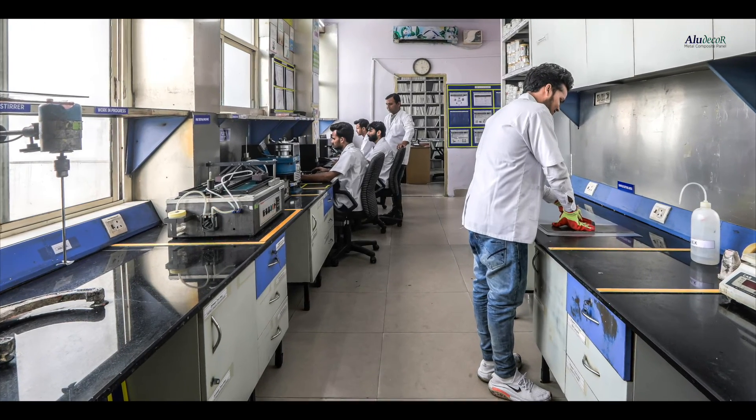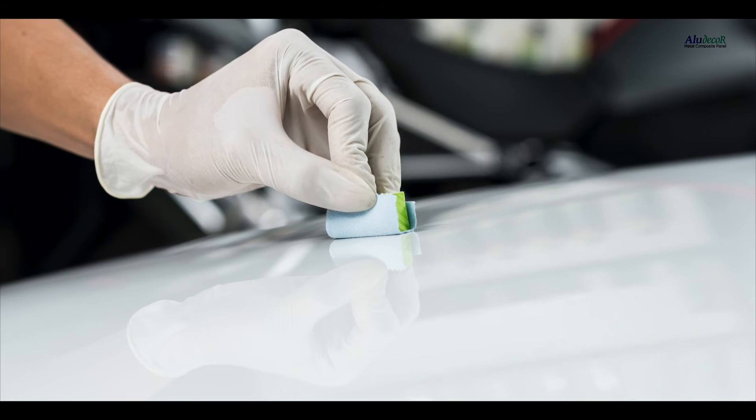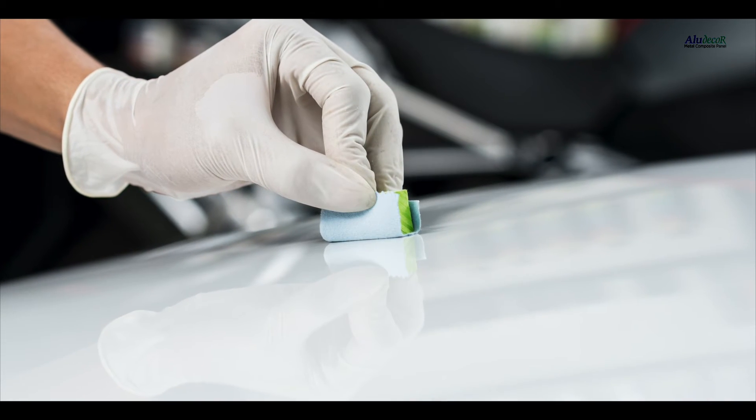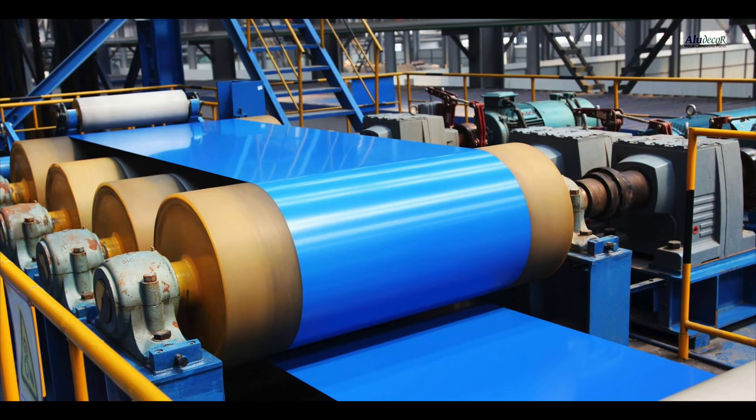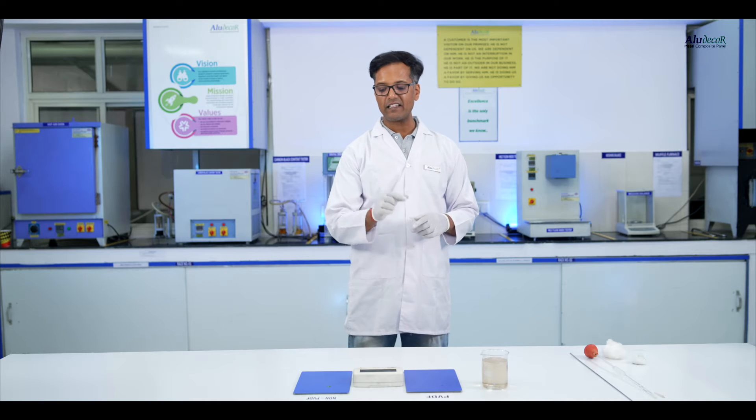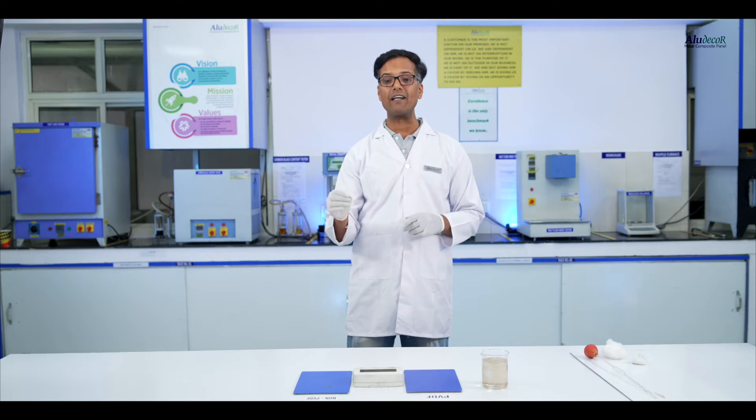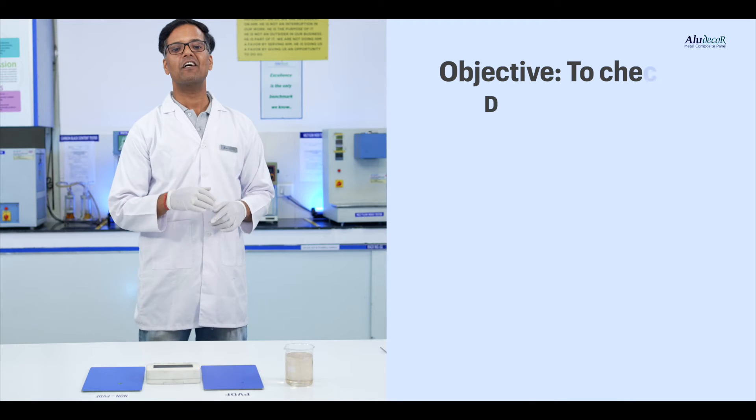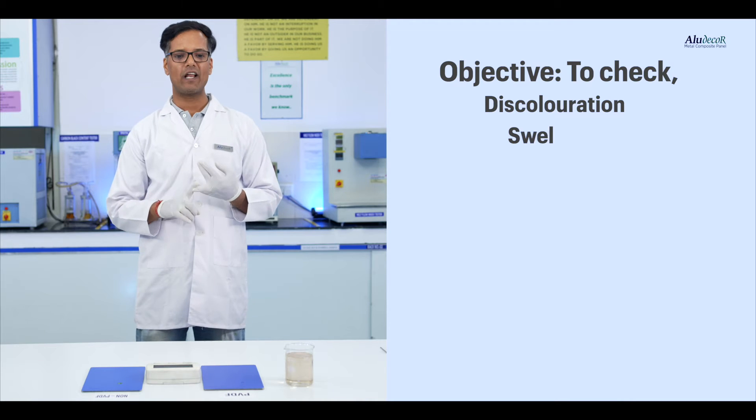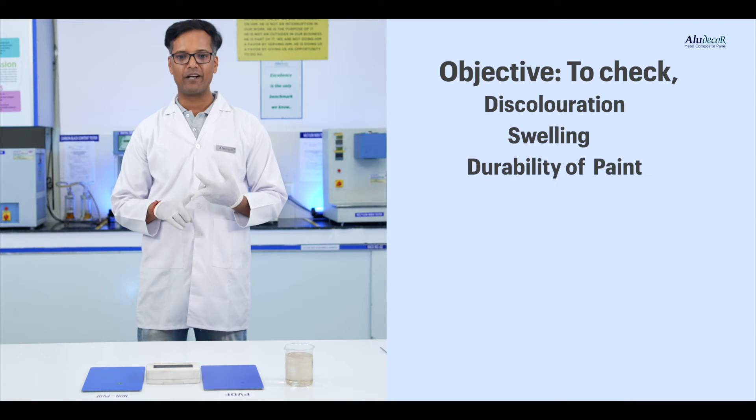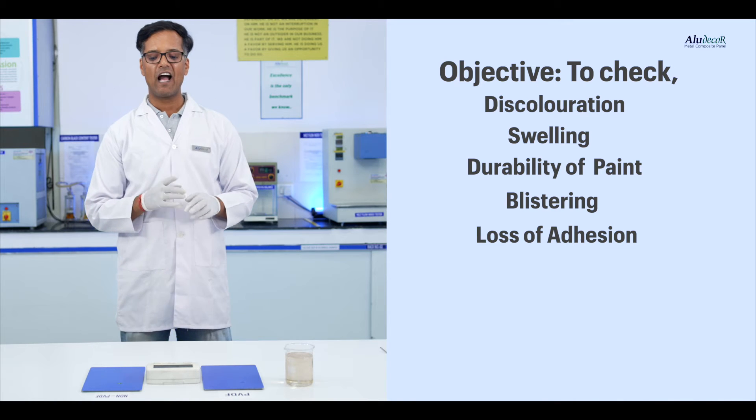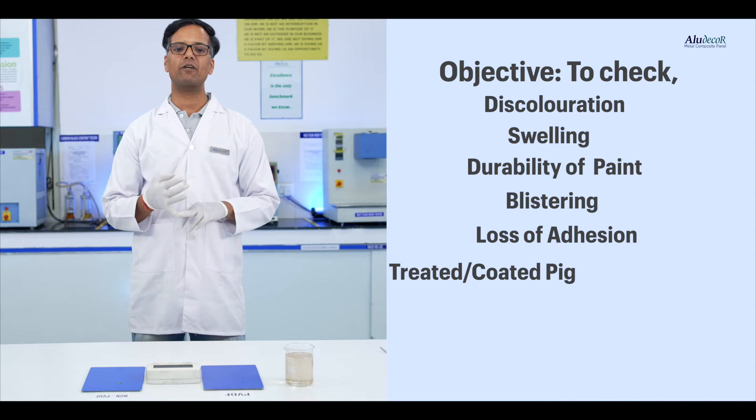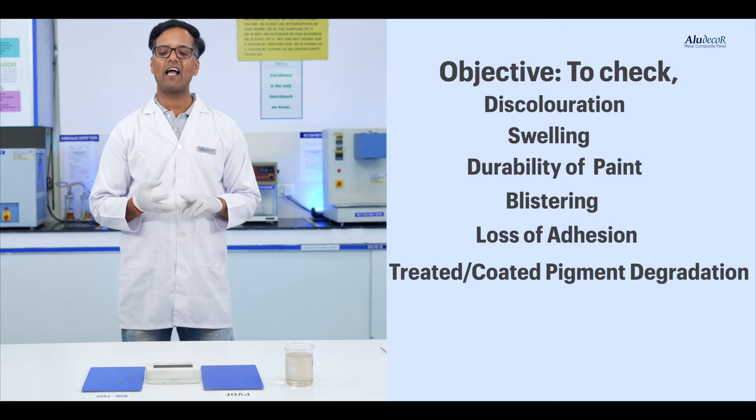Also, this test method covers the determination of effect of acidic chemical on clear and pigmented organic finishes, resulting in any alteration in the paint surface such as discoloration, swelling, durability of paint film, blistering, loss of adhesion, and treated or coated pigment degradation, etc.